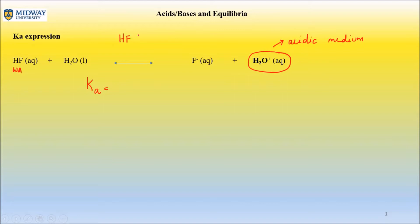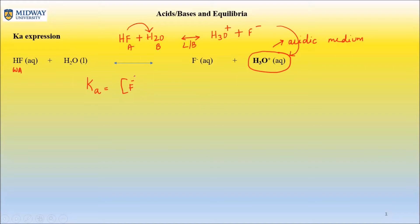I could also give you HF + H2O to test your knowledge of Lowry-Bronsted. That is essentially what this is: hydrogen gets donated here, this is the acid, this is the base, and we have H3O+ plus F-. The Ka expression is the ratio of concentration of products over reactants, so it's [F-] times [H3O+]. You do not have to state AQ; the square brackets themselves indicate aqueous concentration.